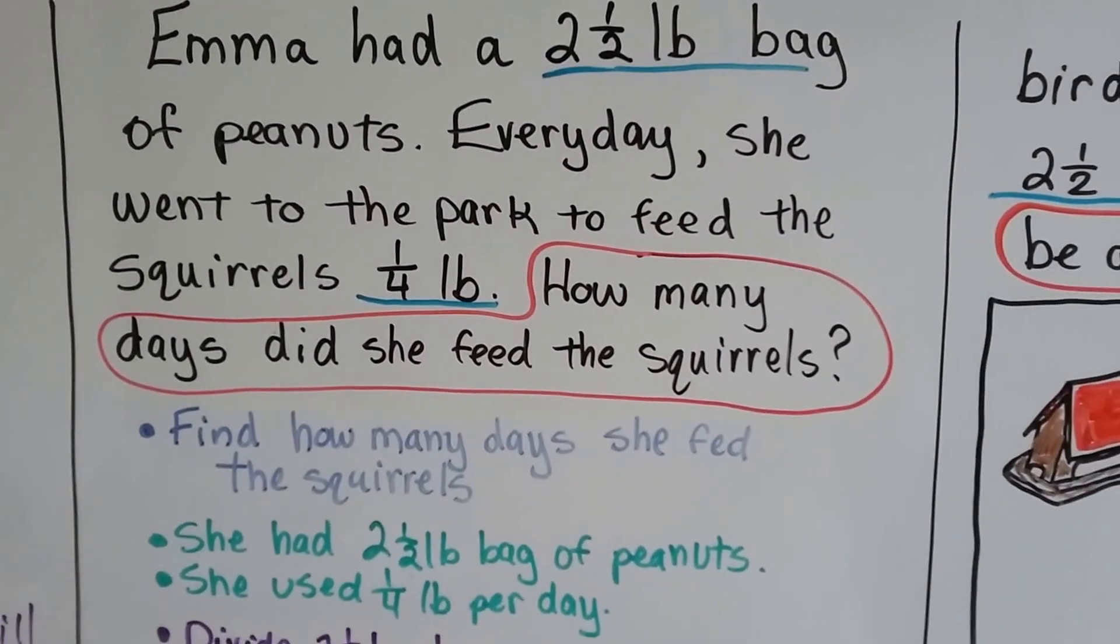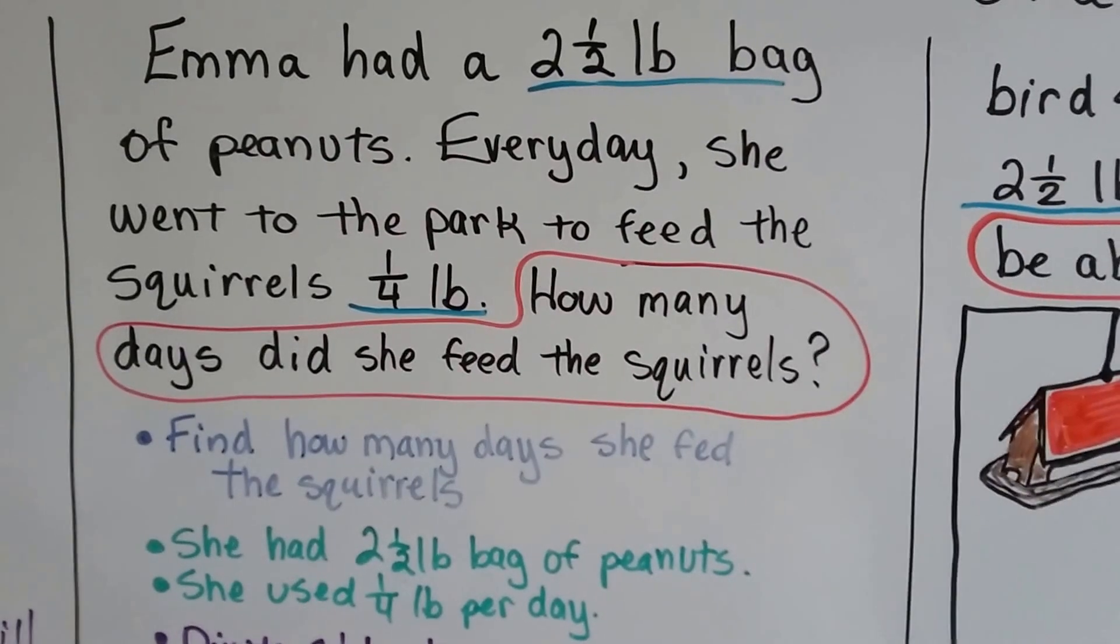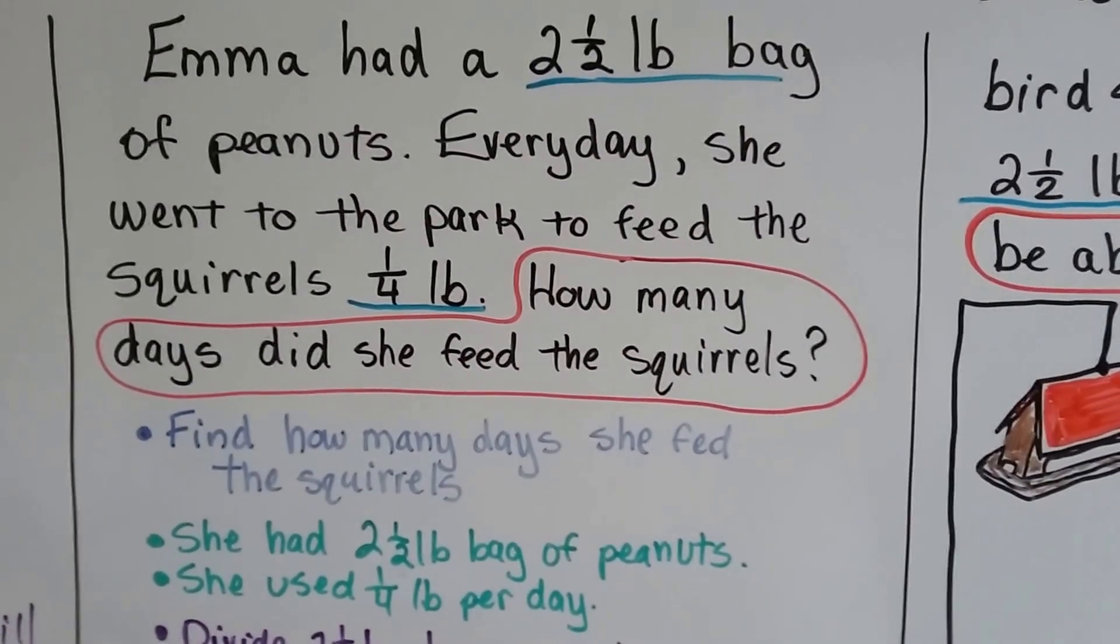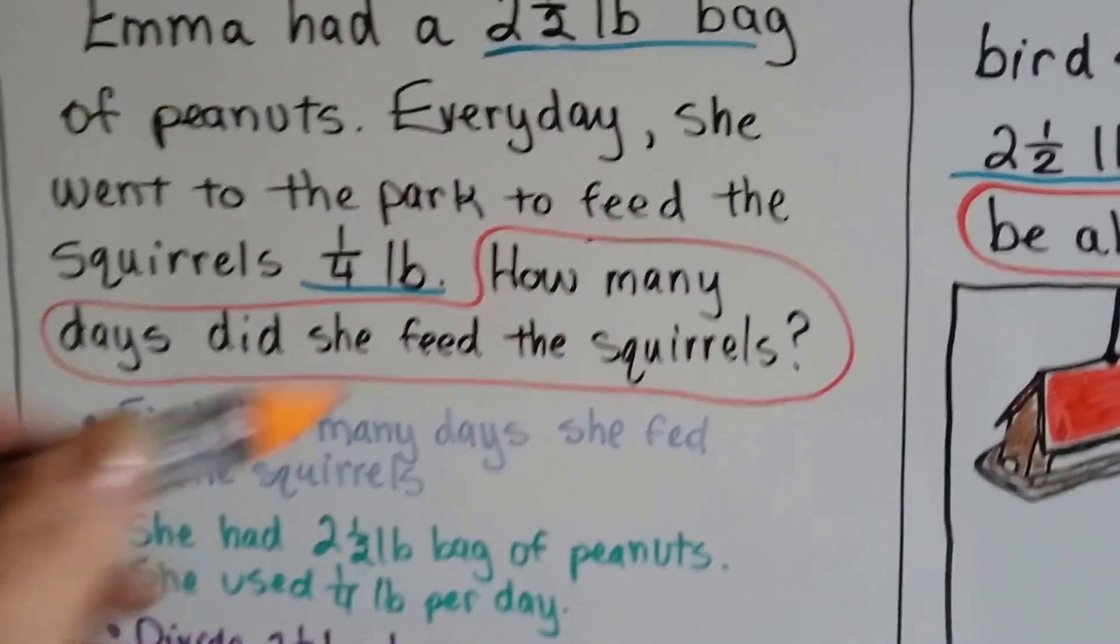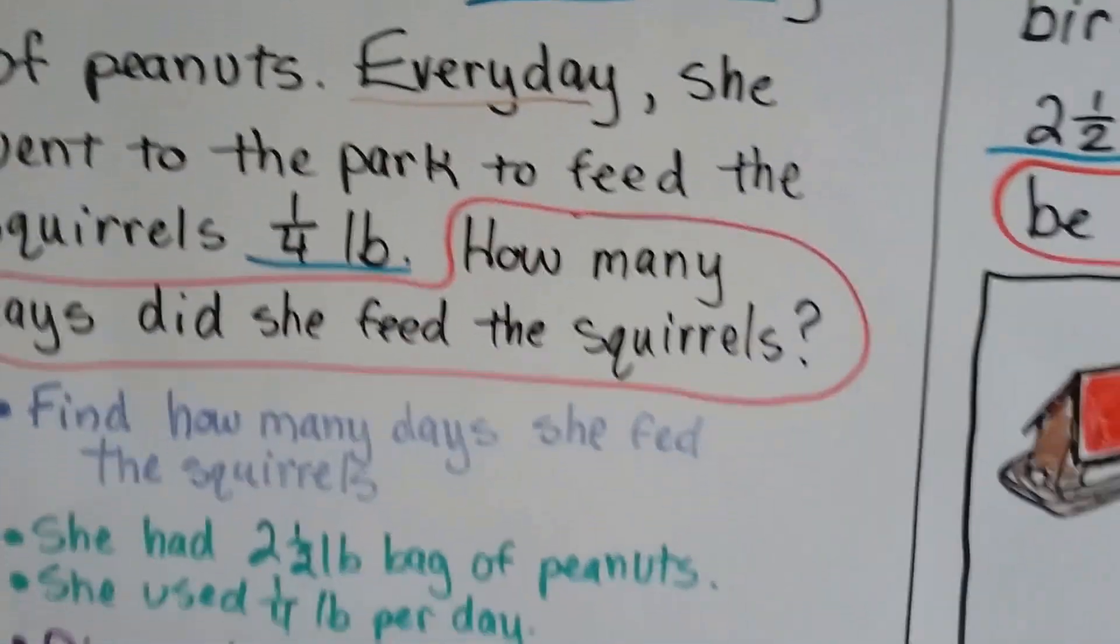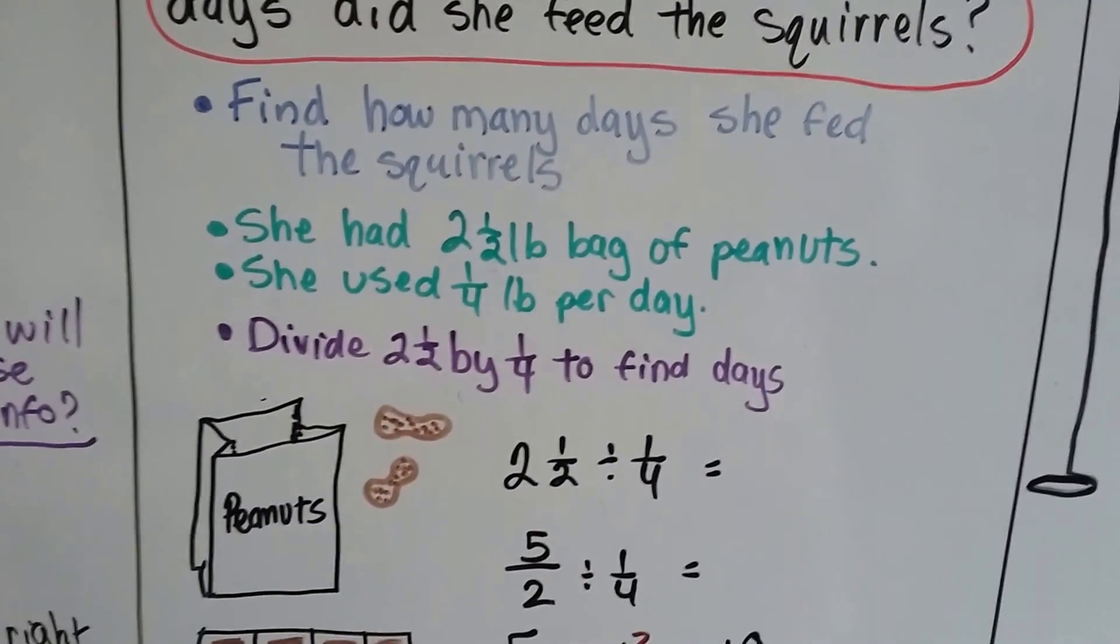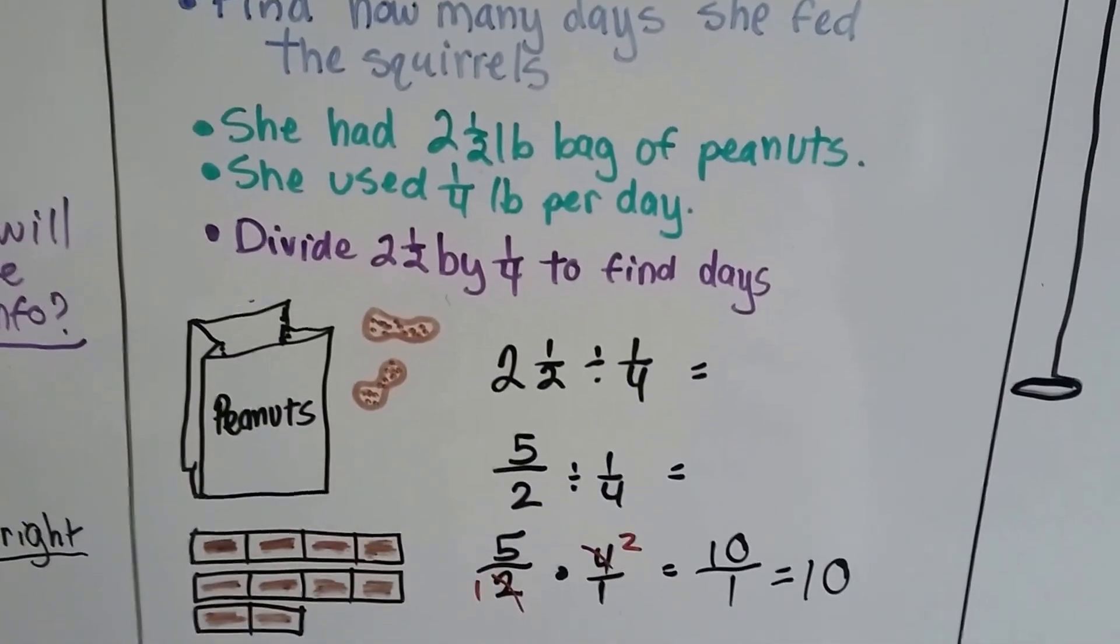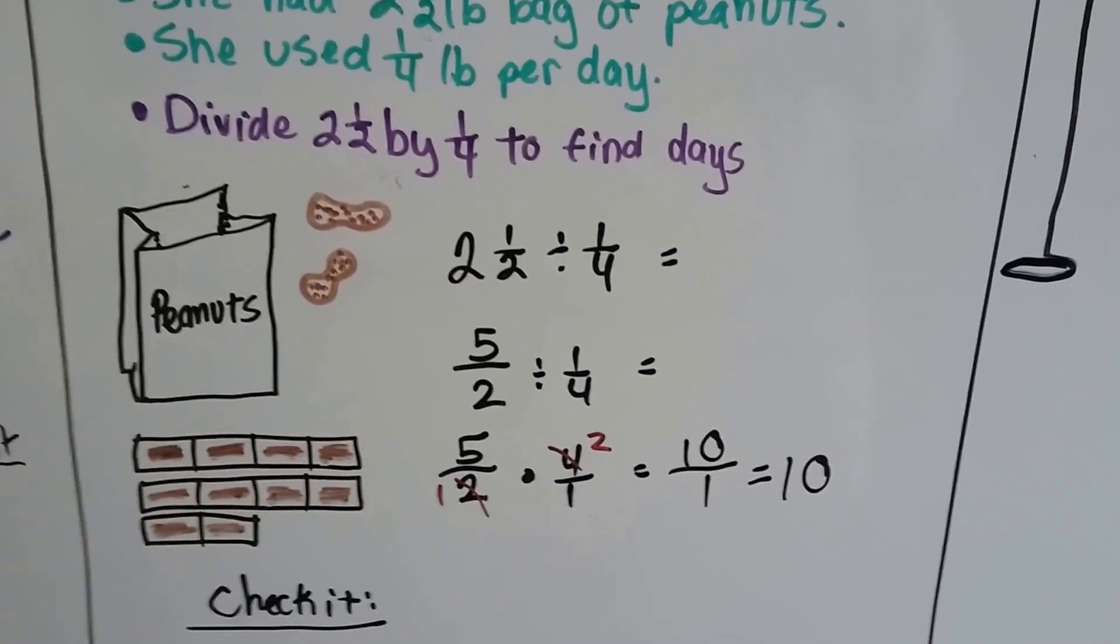How many days did she feed the squirrels is what we need to find out. It's important that we know she has a two and a half pound bag of peanuts, and that she uses one fourth pound every day. Even the word every day is important. We're going to find how many days she fed the squirrels. We're going to divide the two and a half by one fourth to find the days.